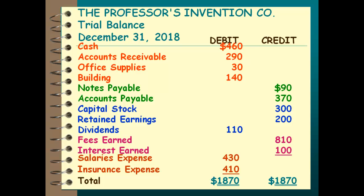What if it didn't balance? For example, if the credit to interest earned was accidentally put in the debit column, that would make my debits $1,970 and my credits $1,770 — a difference of $200. $200 divided by 2 is $100, so go looking for that $100. And if instead of $430 for salaries expense I accidentally wrote down $340, the difference is $90, which is divisible by 9. That doesn't tell you where the error is, but it tells you that you might have flip-flopped the digits somewhere.